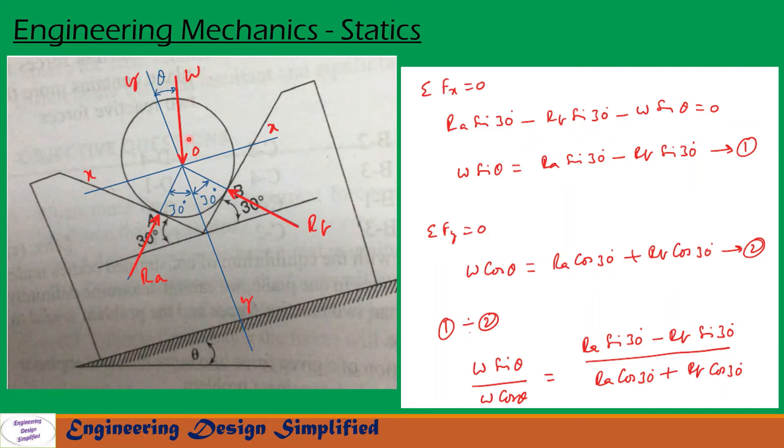Weight W is acting vertically downwards. The component of W along XX will be acting towards this direction and this is theta. So, the component of W along XX will be W sin theta, that is minus W sin theta equal to 0. Now, this equation will become W sin theta equal to Ra sin 30 minus Rb sin 30. Let us call that equation 1.